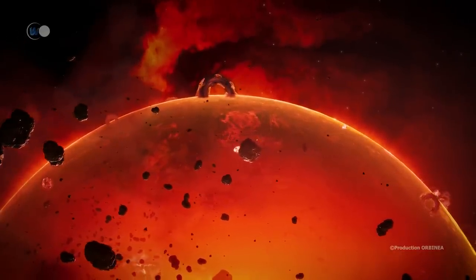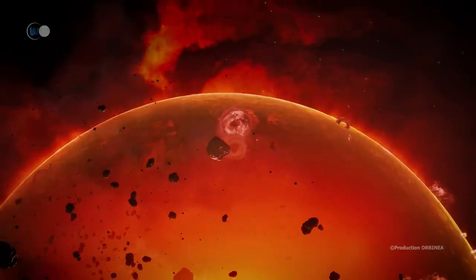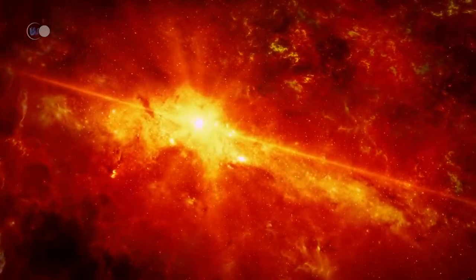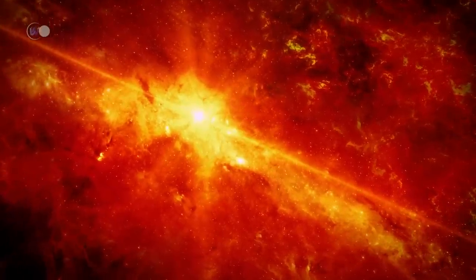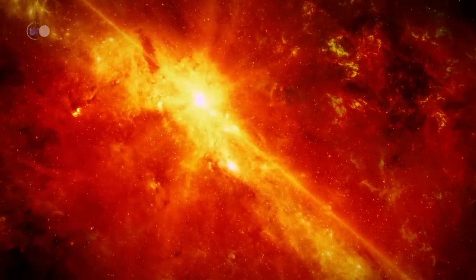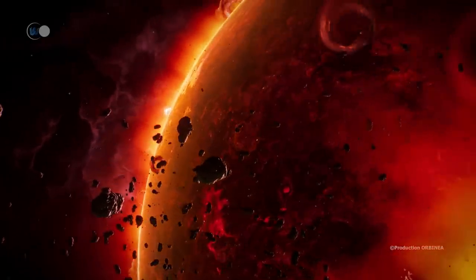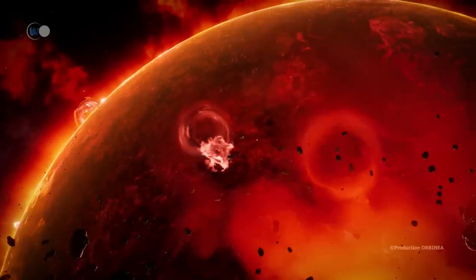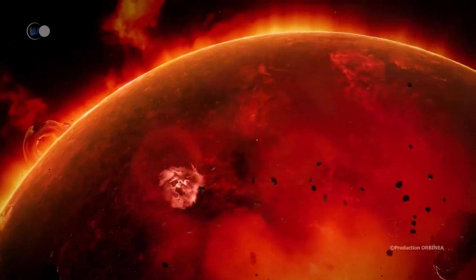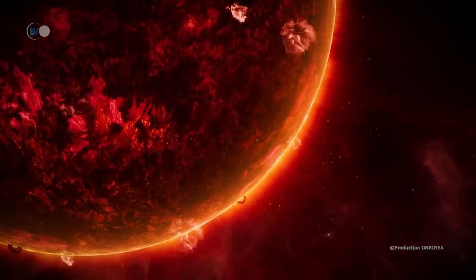Ross 154, also named Gliese 729, has a mass equivalent to 17% of solar mass. Its size is about 20% of the Sun. Its apparent magnitude is only 10.44. The luminosity of this star is relatively low, and represents only 0.4% of the Sun. Ross 154 is so small that it is not able to expel heat from the core at its surface, as do the larger red dwarfs. So it carries this heat to its surface by convection.